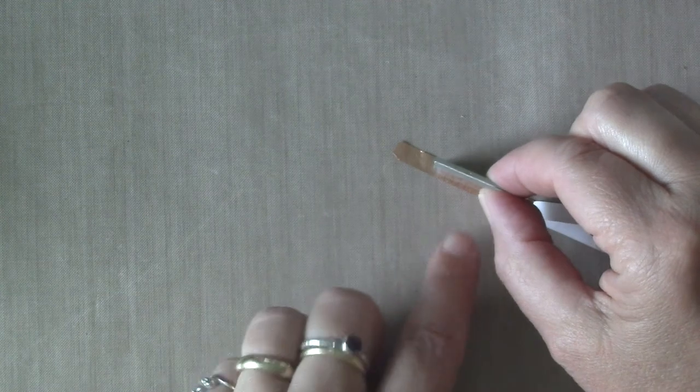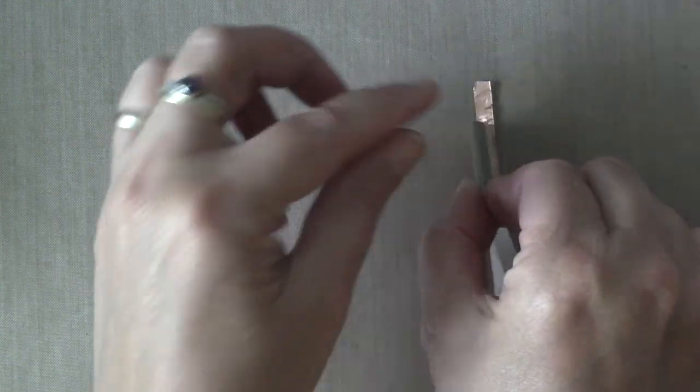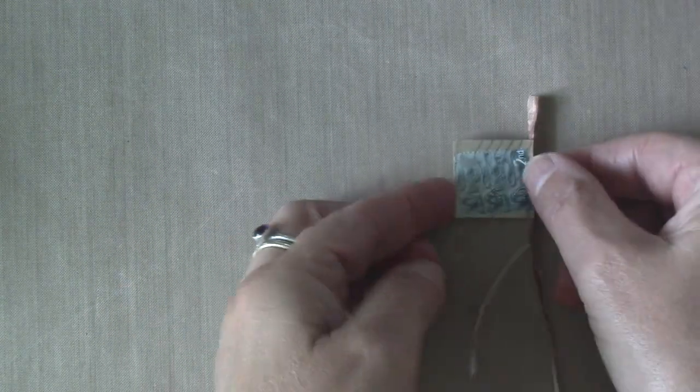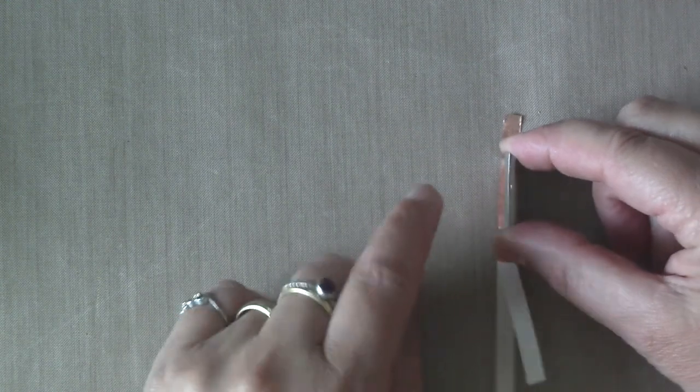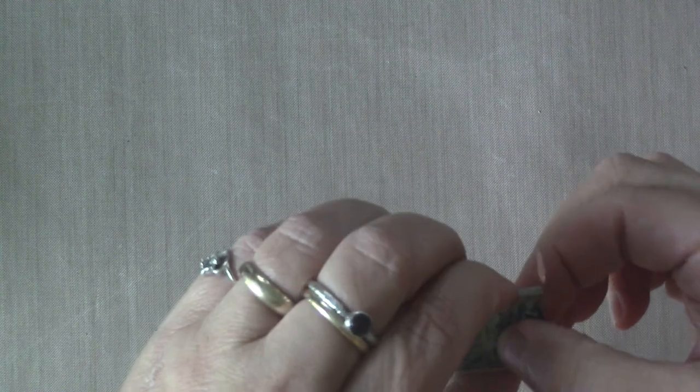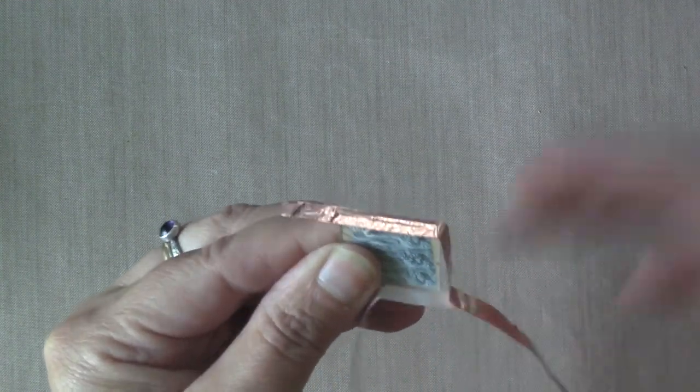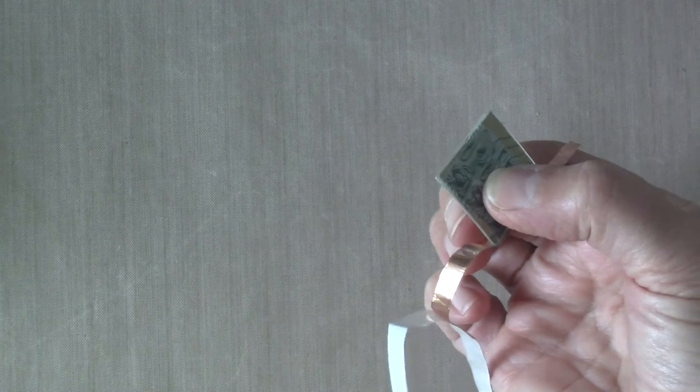So you just want to lay it down right on top of the copper foil so that it's in the middle of the strip, so there's the same amount on each side. And then you just want to wrap it all the way around.